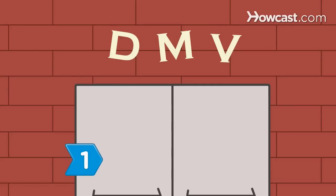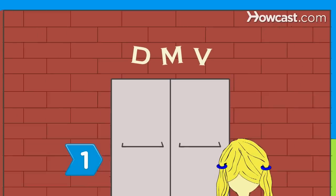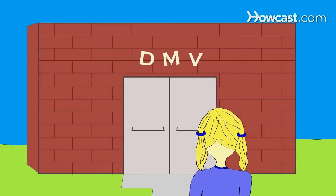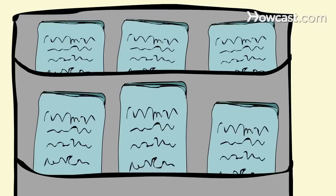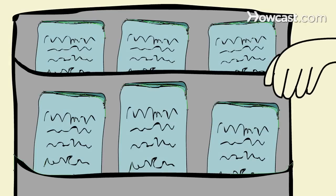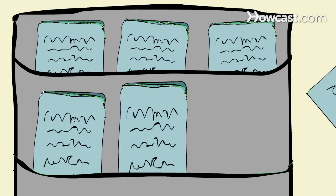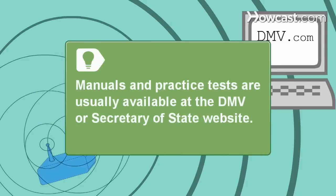Step 1. Visit your local Department of Motor Vehicles or Secretary of State office and get a driver's manual to find out what you will be tested on. Manuals and practice tests are usually available at the DMV or Secretary of State website.